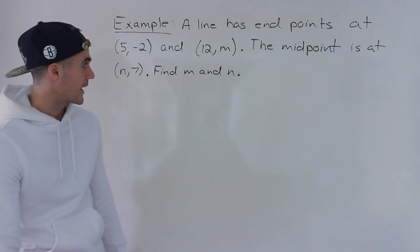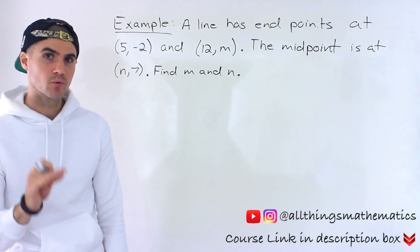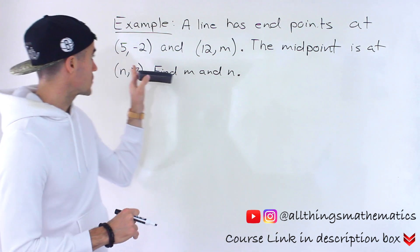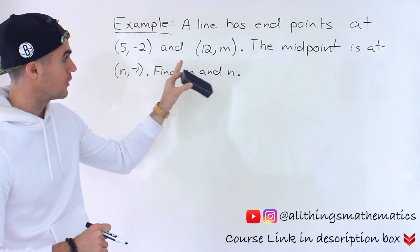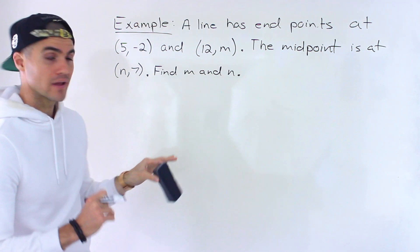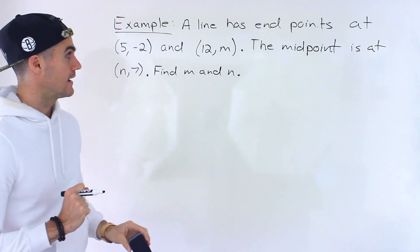What's up everyone? Patrick here. Welcome back and moving on to another question dealing with the midpoint. So a line has endpoints at these coordinates, 5, -2, and then 12 and m. And then we're told the midpoint is at n and 7. And we have to find both m and n here.